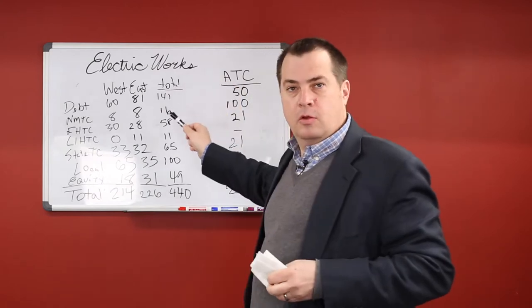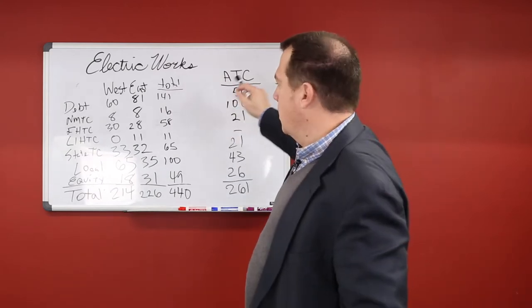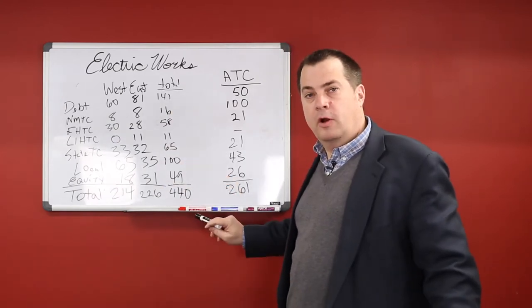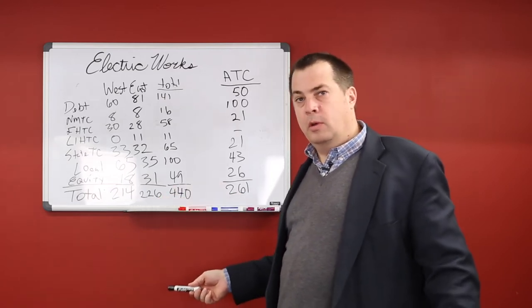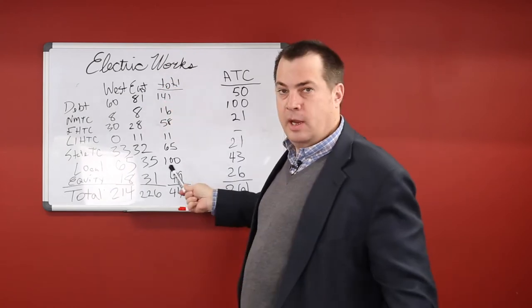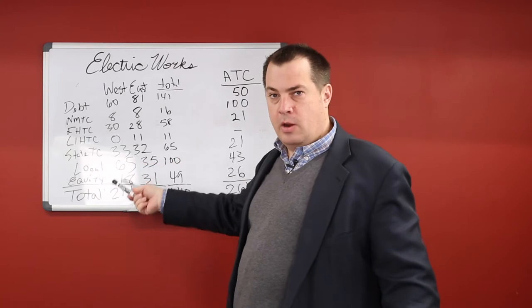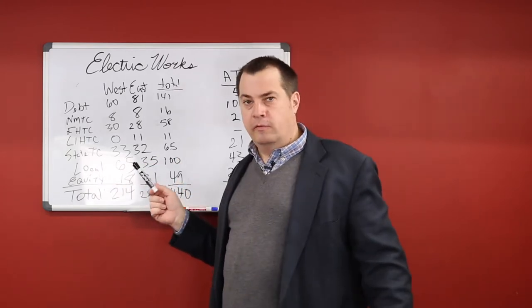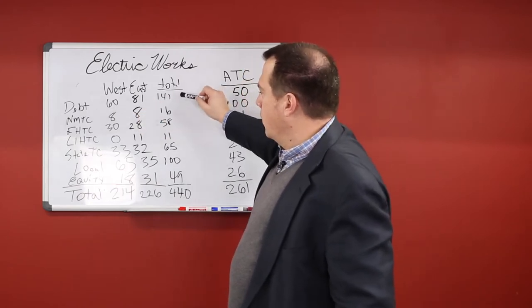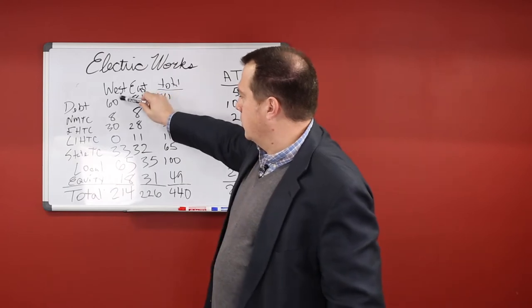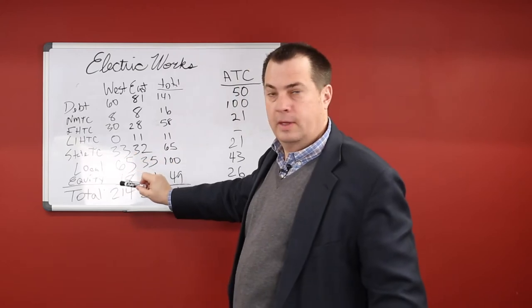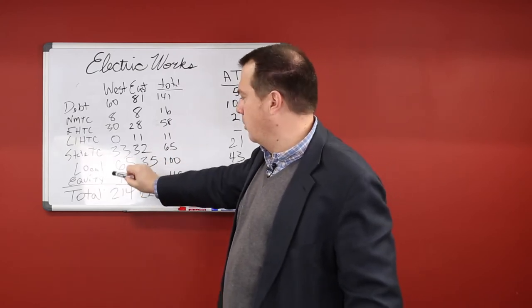But what we have here, this is the capital structure for the Electric Works project. So all the sources of the money that's going to make up the total of $440 million that we talked about before. And the basically $220 million per side. This is the west side and the east side. And these are all projections and may change. But this is what has been shared with council by the developers.